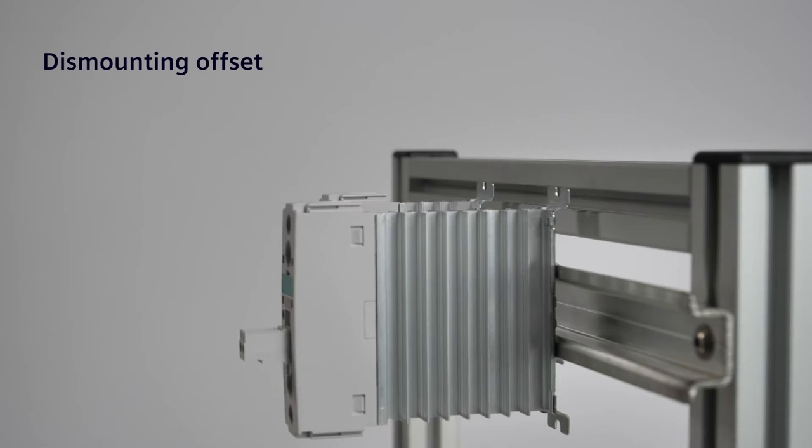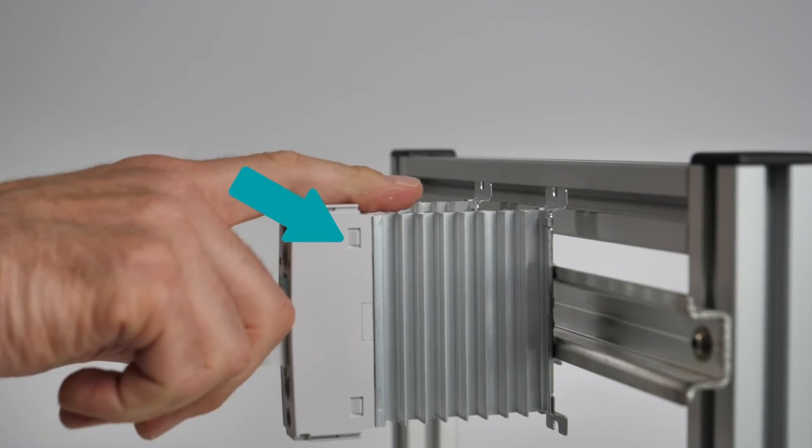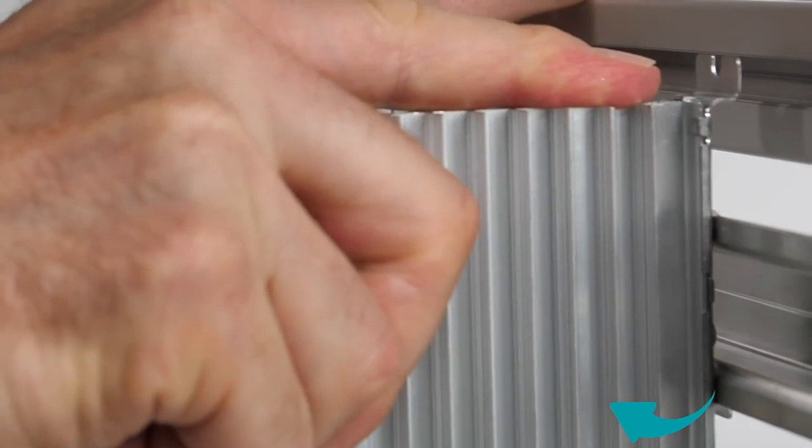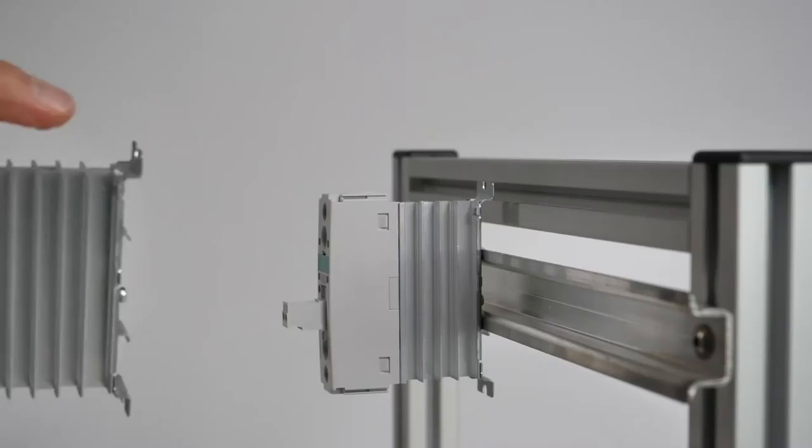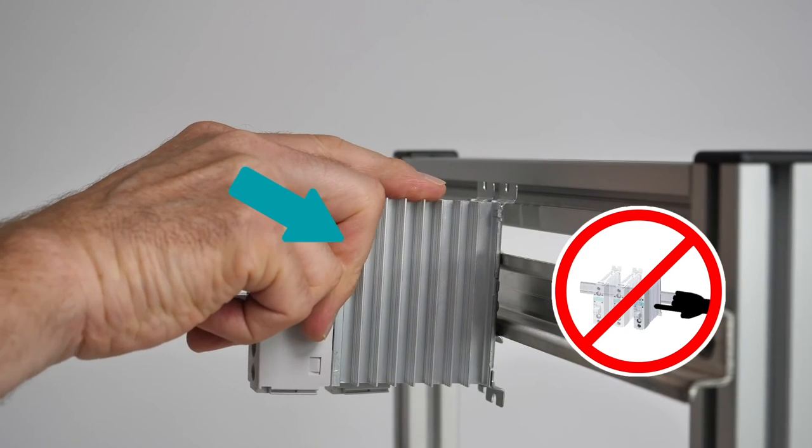Dismounting Offset: To move the device, it is necessary to disassemble it and reassemble it at a different location. Do not push the device.